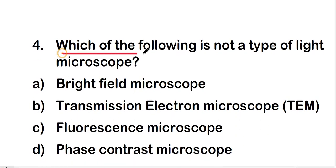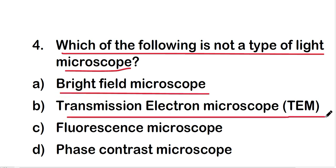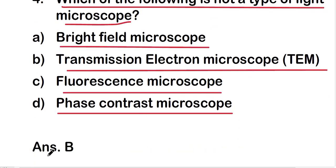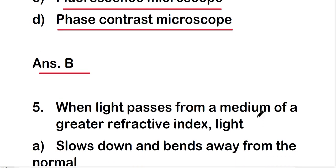Which of the following is not a type of light microscope? The options are bright field microscope, transmission electron microscope (TEM), fluorescence microscope, or phase contrast microscope. The right answer is option B — transmission electron microscope is not a type of light microscope.